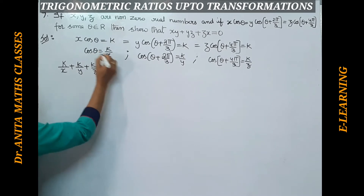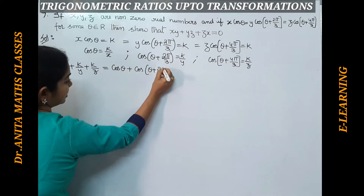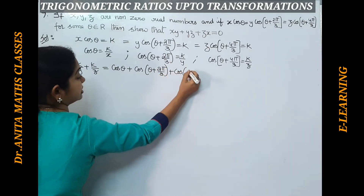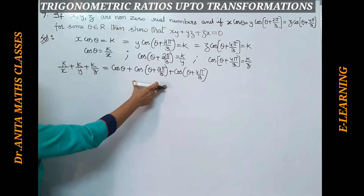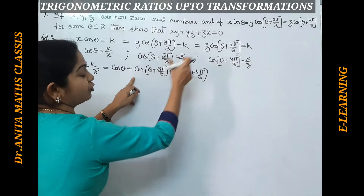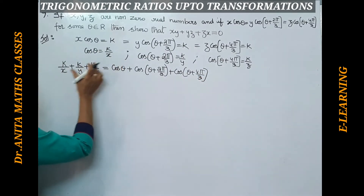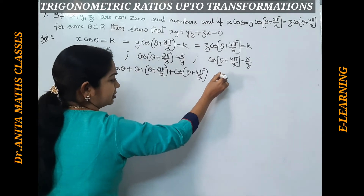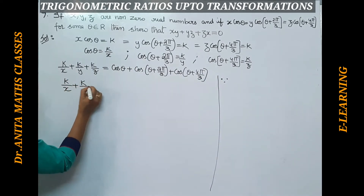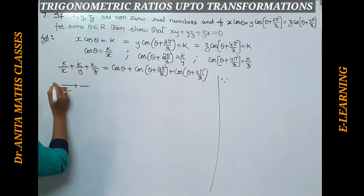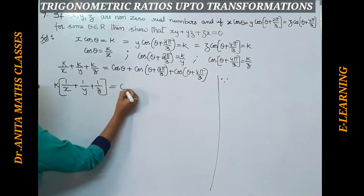Adding: k/x + k/y + k/z = cos θ + cos(θ + 2π/3) + cos(θ + 4π/3). The right-hand side equals 0, as we proved in the second section. Taking k common on the left: k · (1/x + 1/y + 1/z) = 0. Since k is a non-zero constant, we get 1/x + 1/y + 1/z = 0.